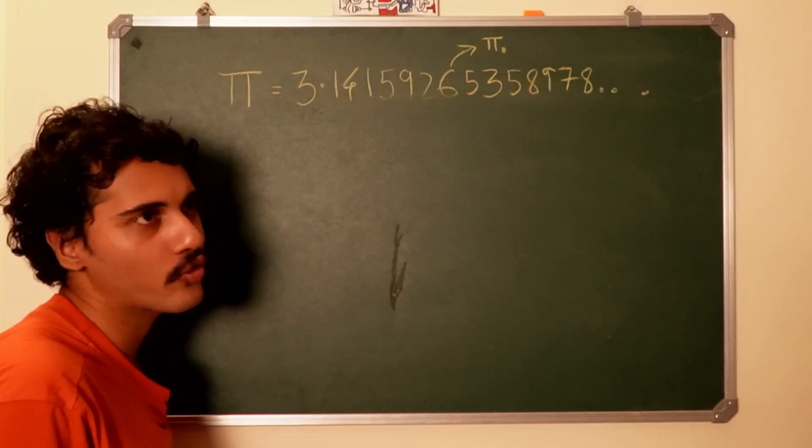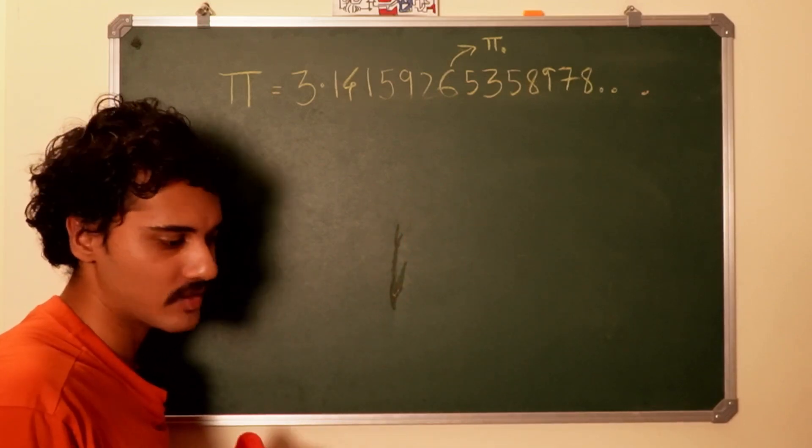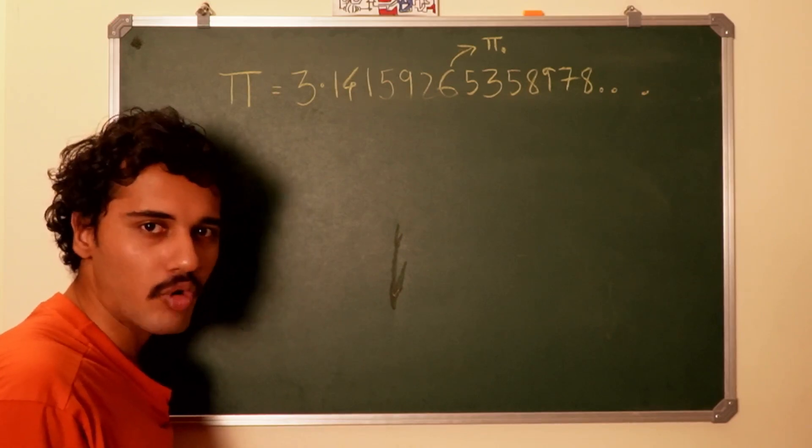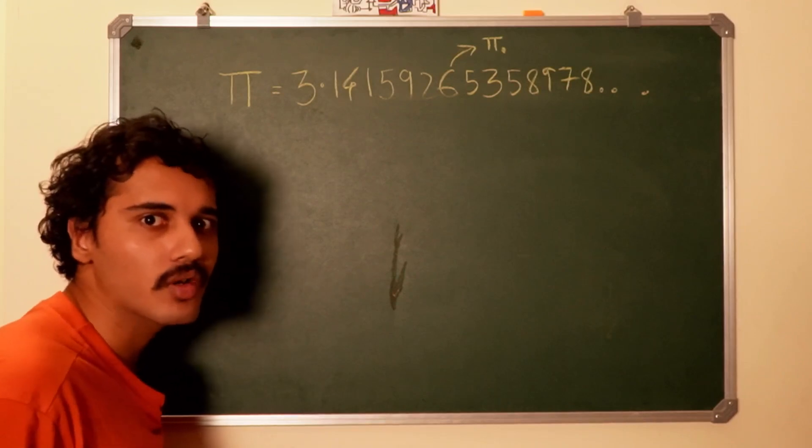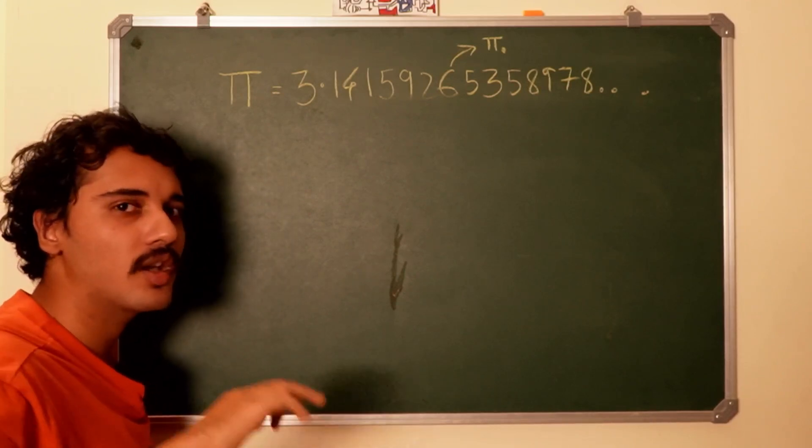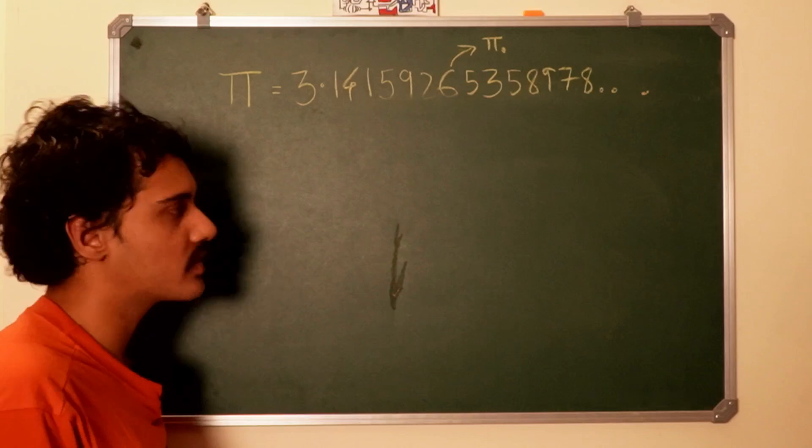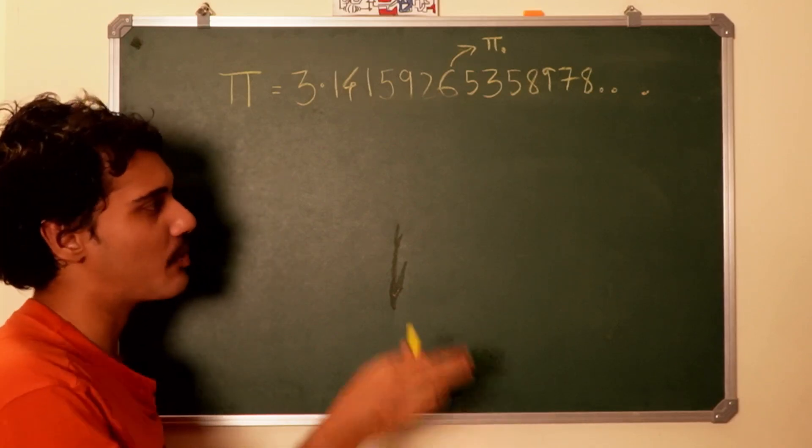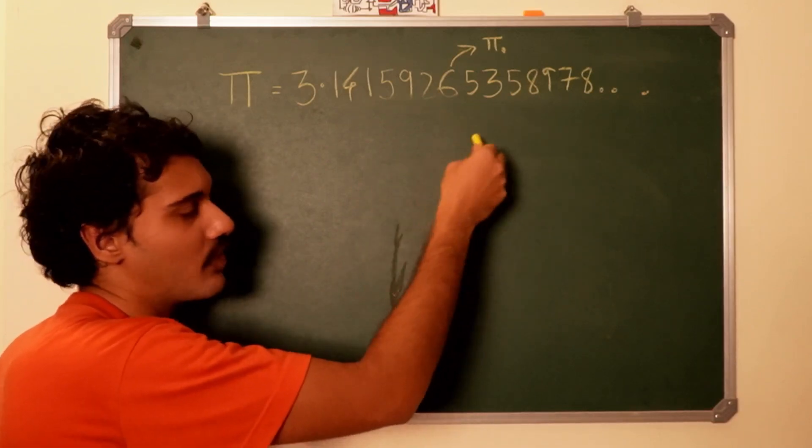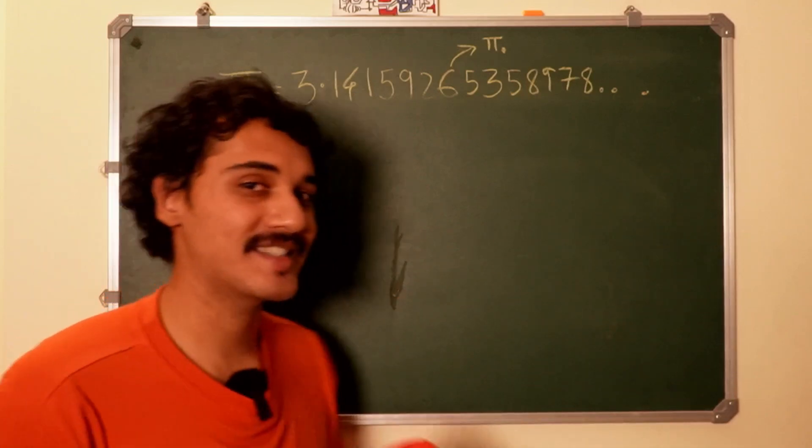And the universe itself might have a curvature. And so hypothetically there could be other universes which are hyperbolic, which I won't go into the detail now, but basically that the alpha plus beta plus gamma would be less than pi in the hyperbolically curved universes.